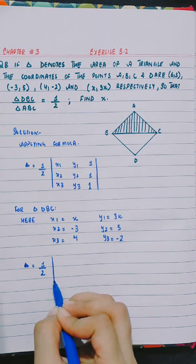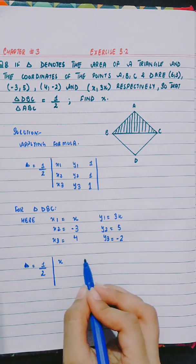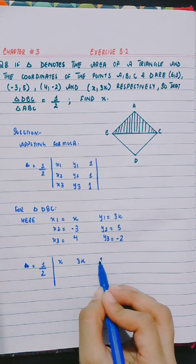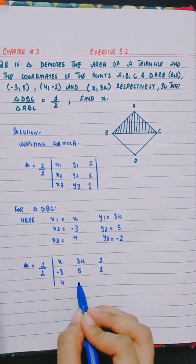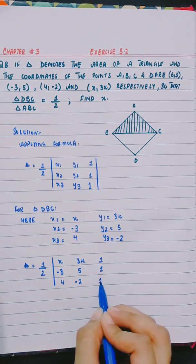Half of determinant: x, 3x, 1, -3, 5, 1, 4, -2, 1.